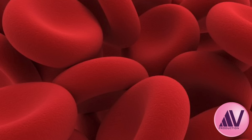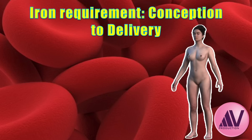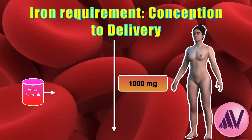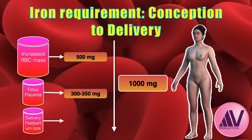What is the total iron requirement of a pregnant woman with a singleton pregnancy from conception to delivery? A pregnant woman weighing 55 kg will require approximately 1,000 mg (1 g) of extra iron during gestation. This is distributed as follows: fetus and placenta require 300–350 mg; expansion of RBC mass requires around 500 mg; and postpartum blood loss accounts for 180 mg. Therefore, adequate iron intake is crucial to support these changes, prevent iron deficiency anemia, and ensure a healthy pregnancy outcome.